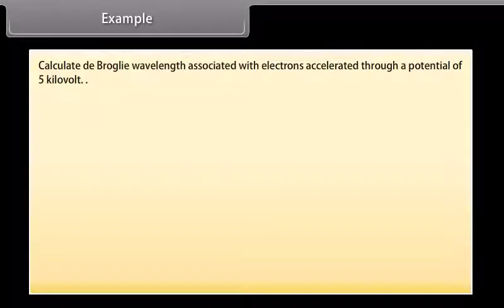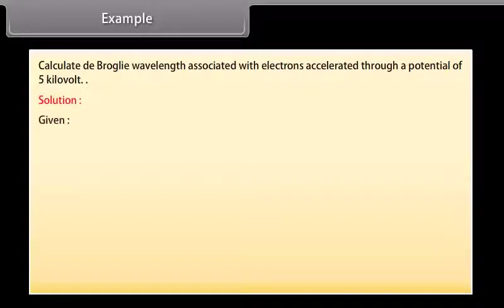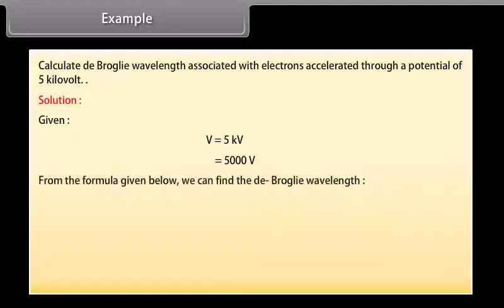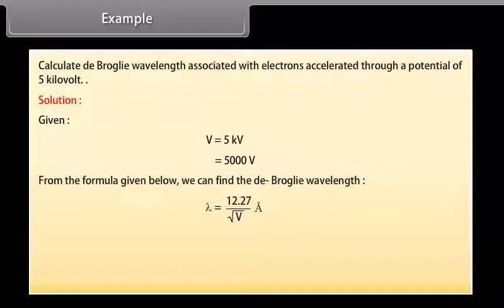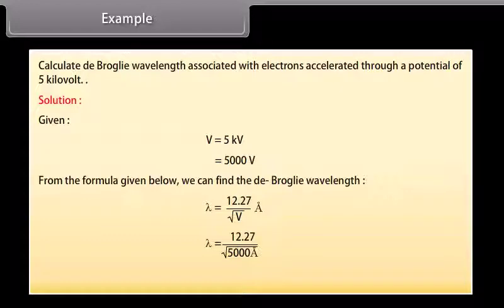Example: Calculate the de Broglie wavelength associated with electrons accelerated through a potential of 5 kV. Given V = 5 kV = 5000 V. Using λ = 12.27/√V Å: λ = 12.27/√5000 = 0.173 Å.